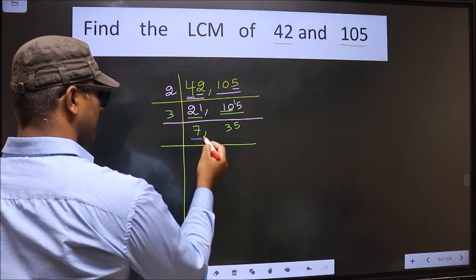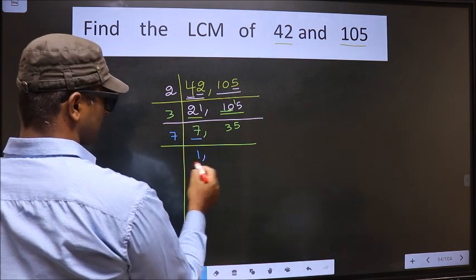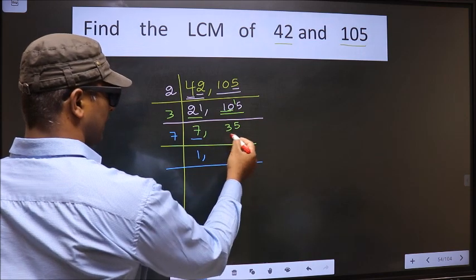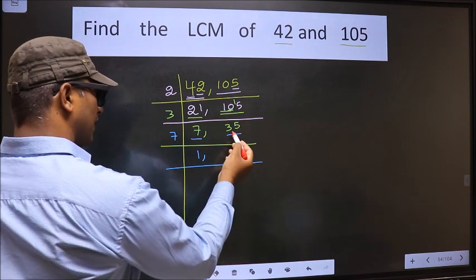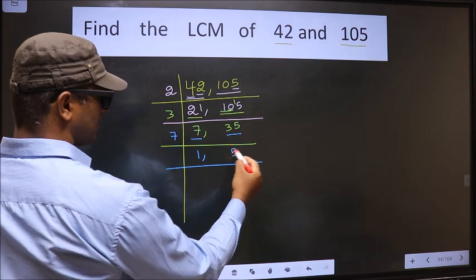Now here we have 7. 7 is a prime number. So 7 times 1 is 7. The other number 35. When do we get 35 in 7 table? 7 times 5 is 35.